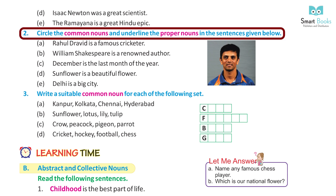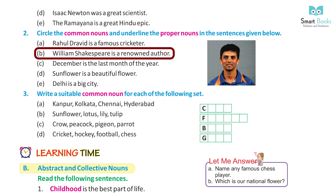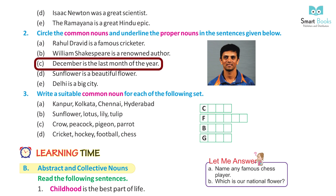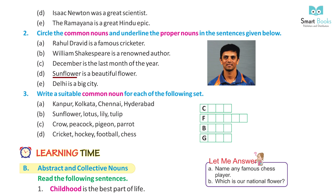Question 2: Circle the common nouns and underline the proper nouns in the sentences given below. A) Rahul Dravid is a famous cricketer. Answer: underline Rahul Dravid, circle cricketer. B) William Shakespeare is a renowned author. Answer: underline William Shakespeare, circle author. C) December is the last month of the year. Answer: underline December, circle month and year. D) Sunflower is a beautiful flower. Answer: underline Sunflower, circle flower. E) Delhi is a big city. Answer: underline Delhi, circle city.